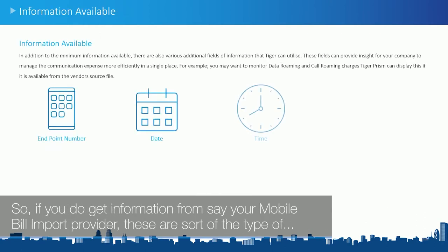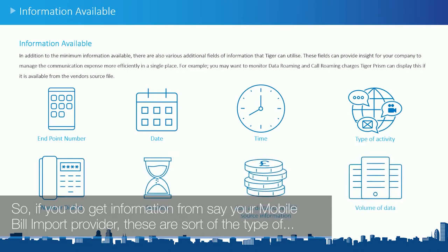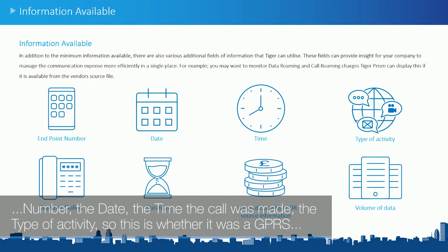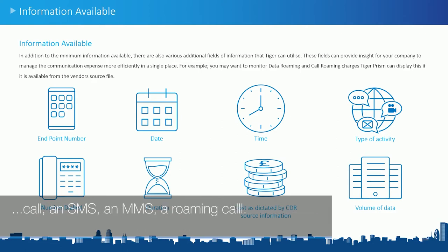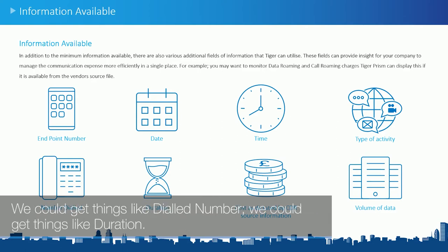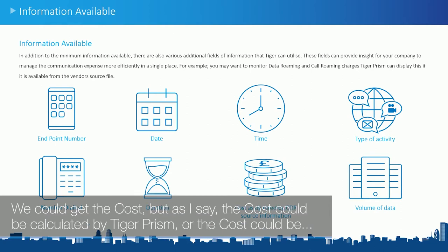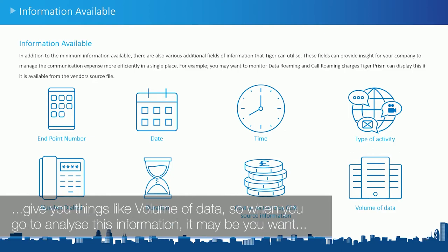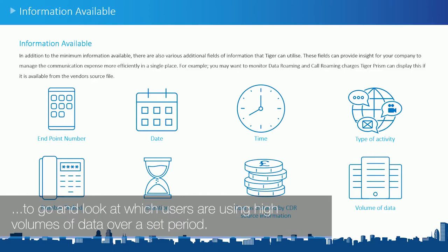From your mobile billing import provider, you'll be able to get things like the endpoint number, the date, the time the call was made, and the type of activity — whether it was a GPRS call, an SMS, an MMS, or a roaming call. You can also get the dialed number, duration, and cost. The cost can be calculated by TigerPRISM, taken directly from your file, or you could get a hybrid of both. For mobile GPRS calls, we can also give you things like volume of data, so you can analyze which users are using high volumes of data over a set period.